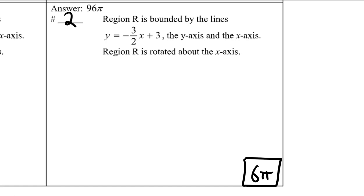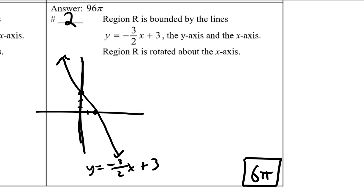Okay, region R is negative 3 halves x plus 3, so y-intercept and slope.